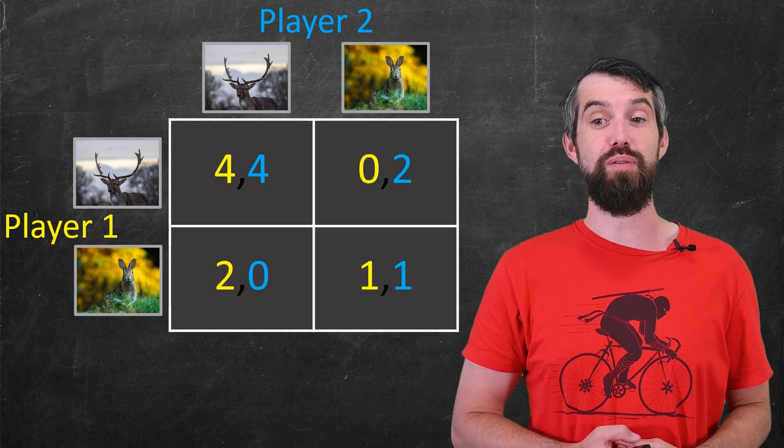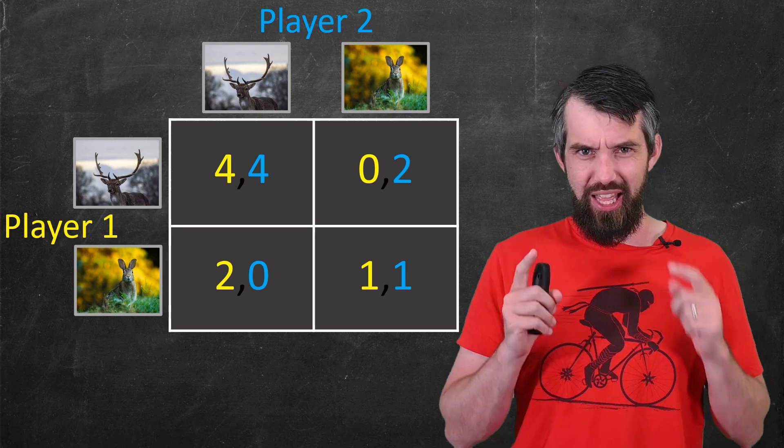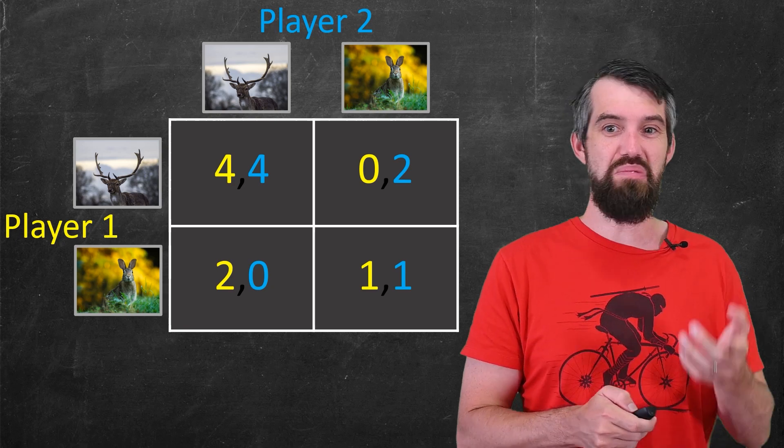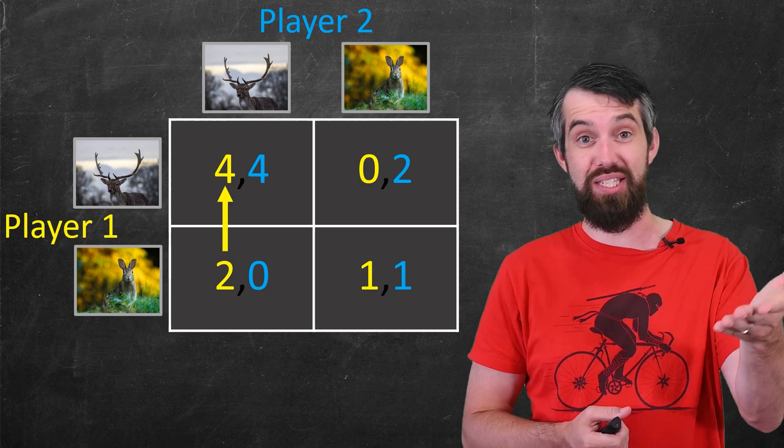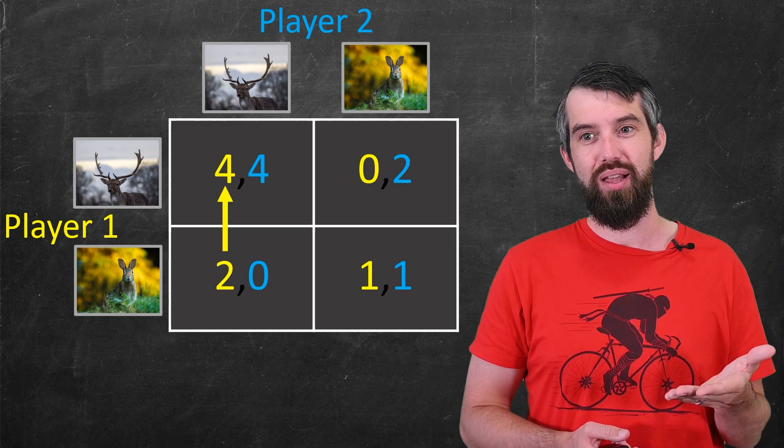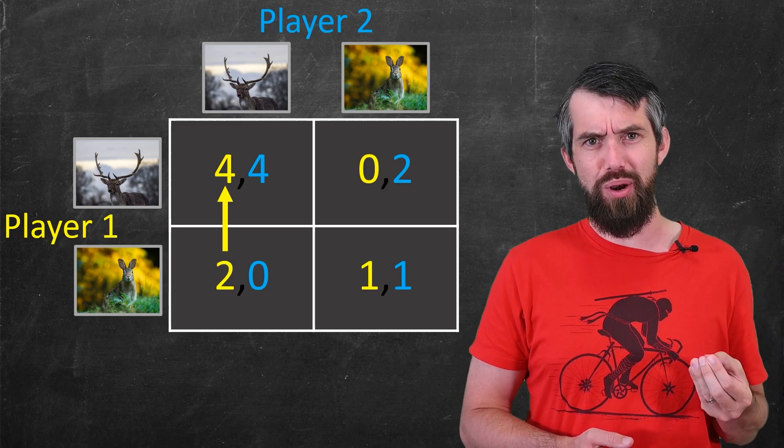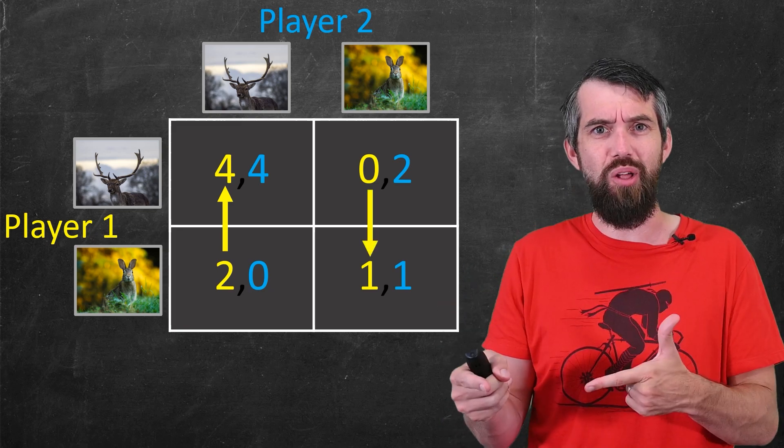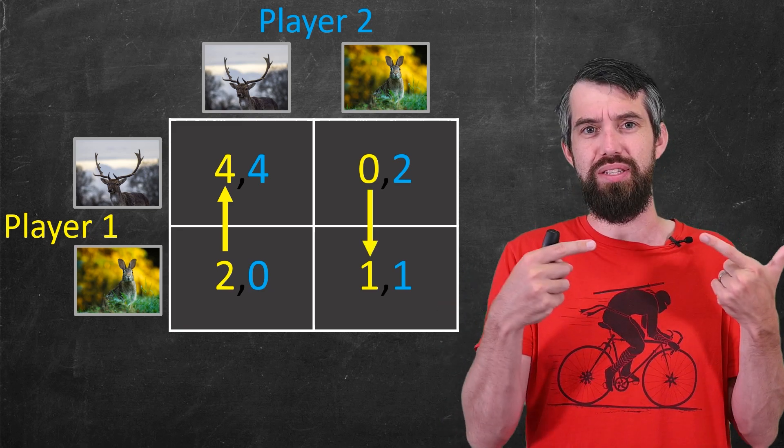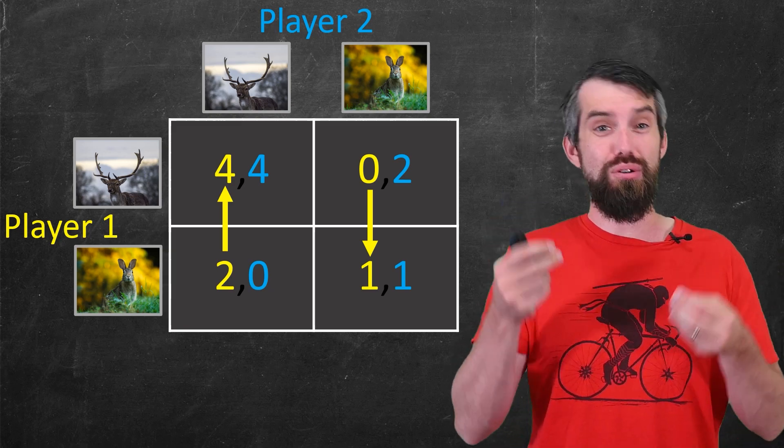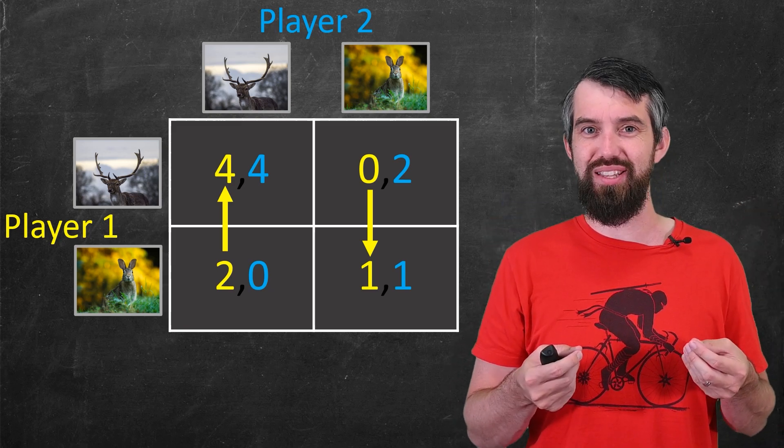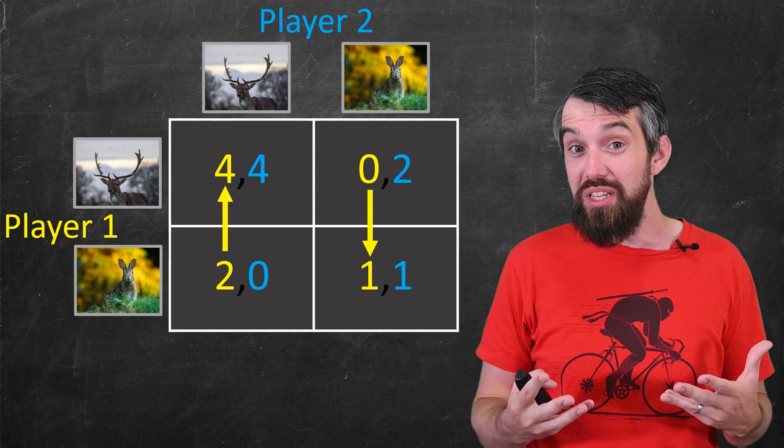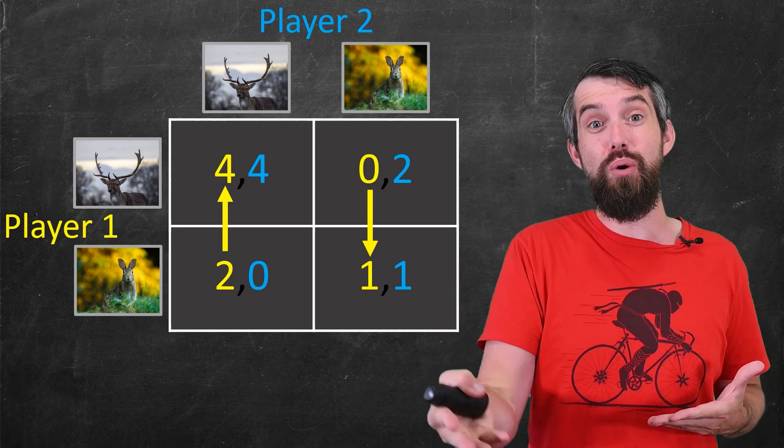For example, think about this from player 1's perspective. If you know player 2 is going to play stag, then you would be better off to play stag than to play hare. 4 is better than 2. But if you knew your opponent was going to play hare, then you actually should play hare as well because 1 is better than 0. And because these arrows go in opposite directions, there's not this dominating strategy where it's always better to play stag or always better to play hare. It depends on what your opponent does.